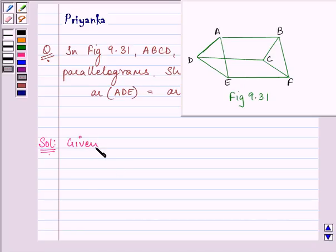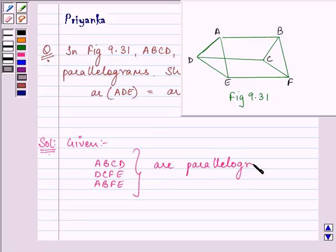We are given ABCD, DCFE, and ABFE all are parallelograms. And one of the properties of parallelogram will help us in proving that area of ADE is equal to area of BCF.